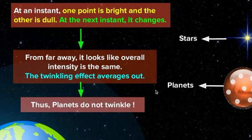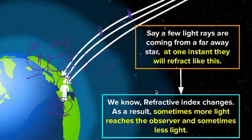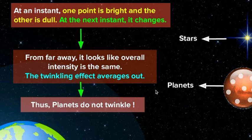Now planets don't twinkle. At one instant, one point is bright and the other is dull. At the next instant it can change also. From far away it will look like overall intensity is the same. The twinkling effect is normalized. That's why planets don't twinkle, because planets are far away from us. So intensity appears almost the same - it doesn't look like they twinkle. That's the reason.